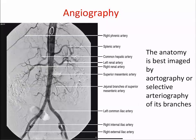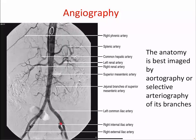Conventional angiography: the anatomy is best demonstrated by aortography or selective arteriography of its branches. The catheter — a pigtail catheter — is inserted through the common femoral vein to the abdominal aorta, and contrast is given so that the aortic branches and their subdivisions are clearly visualized.